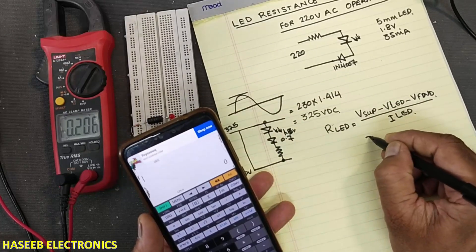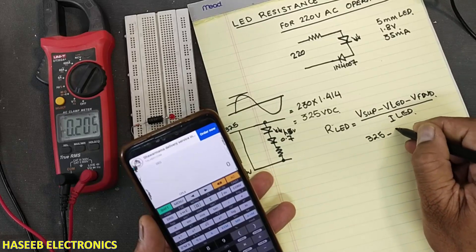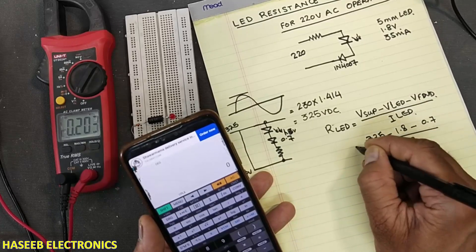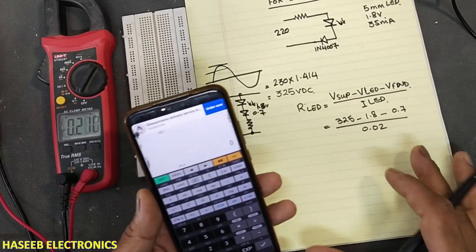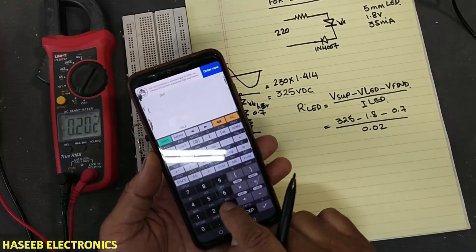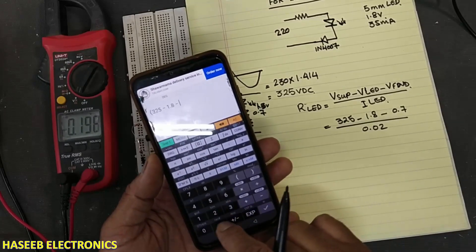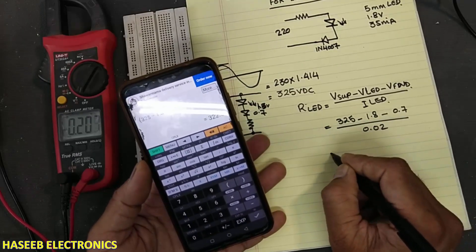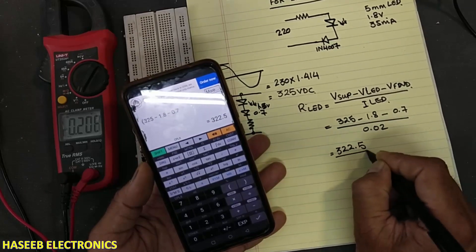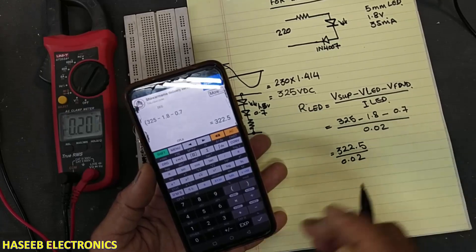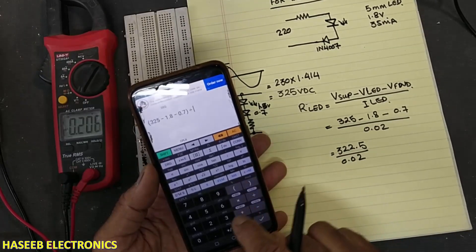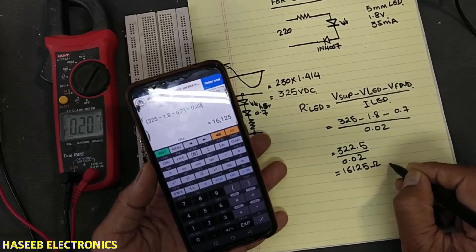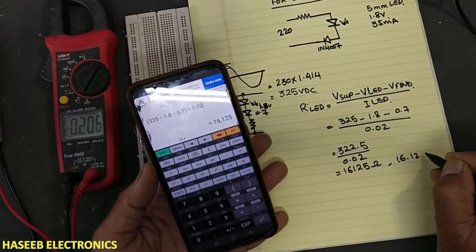325 volt minus 1.8 minus 0.7 divided with 0.02, it is 20 milliampere. Let's calculate it. 325 minus 1.8 minus 0.7 equals 322.5 volt divided with 0.02. It is 16,125 ohms or we can say 16.125 kilo ohm.